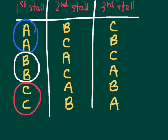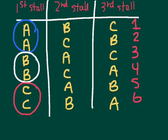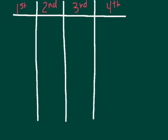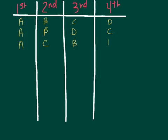Now adding a fourth horse gives six arrangements so far. Adding a fourth horse — A, B, C, D — keep A in the first position, keep B in the second, and switch C and D. Then put C in the second position, B in the third, and D in the fourth. Keep A in the first position, keep C in the same second position, then switch D and B.